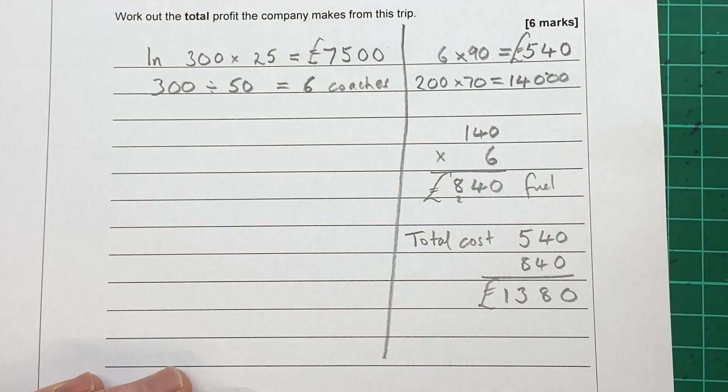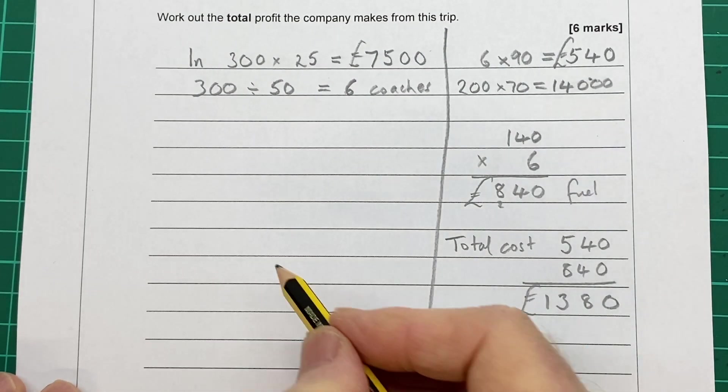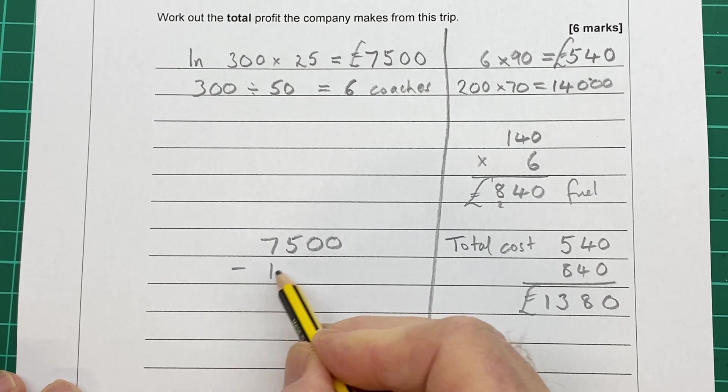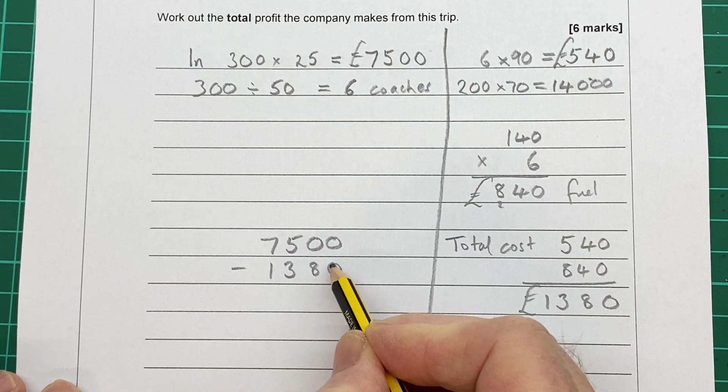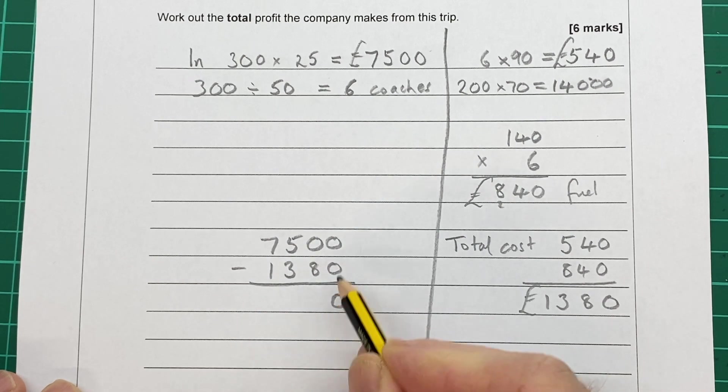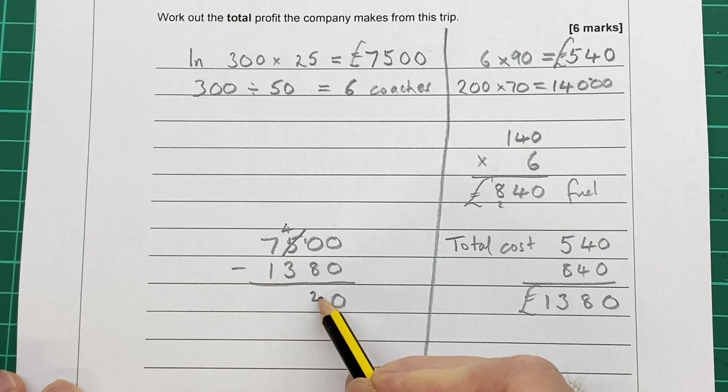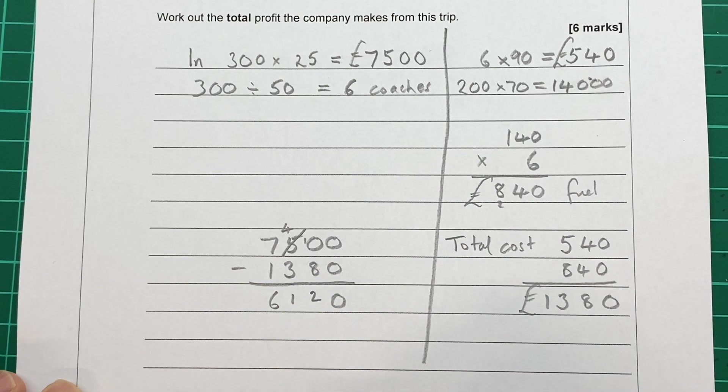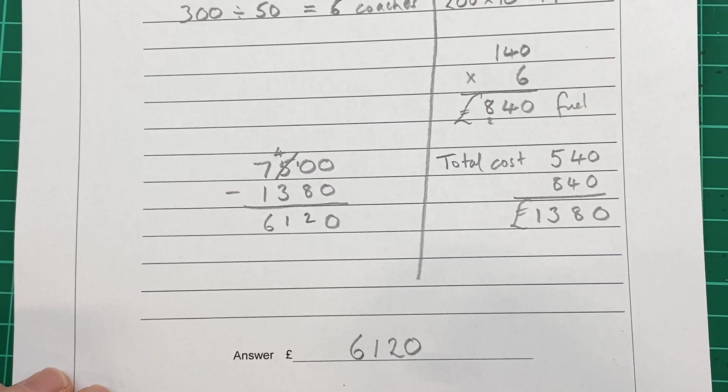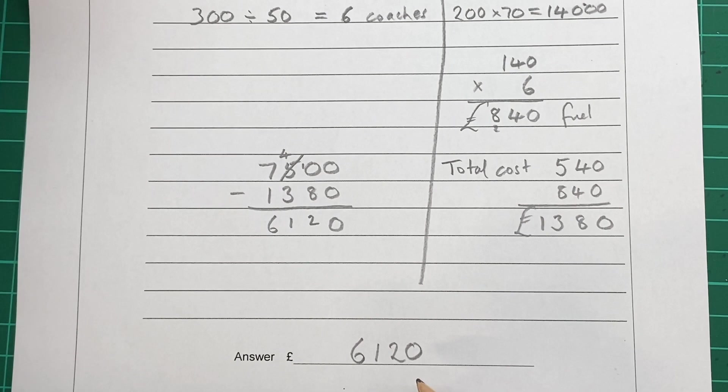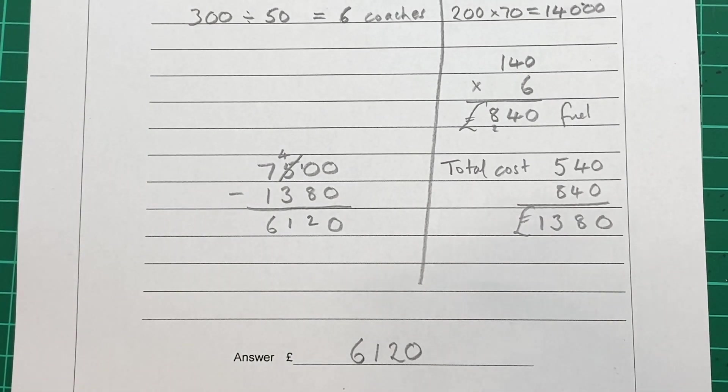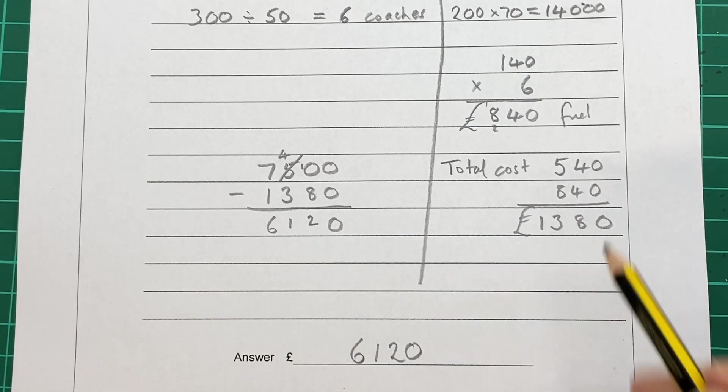The income was seven thousand five hundred. The cost is one thousand three hundred and eighty. So if we do income minus cost. That's a zero. Zero take eight. Well we'll have to cross out the five, put four. Ten take eight is two. Four take three is one. Seven take one is six. So the profit is six thousand one hundred and twenty pounds. I've written in the answer there. I don't need to write the pound sign because they've put it there for me. That is the profit, the income minus the total cost.